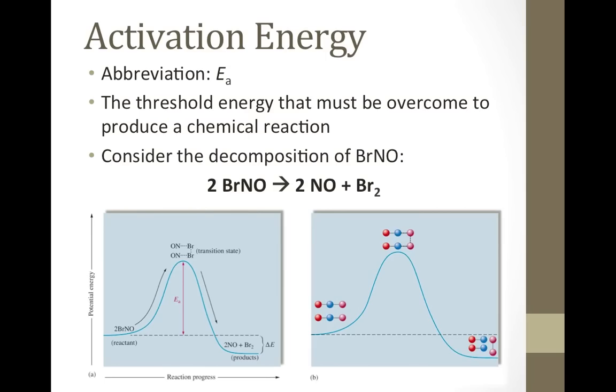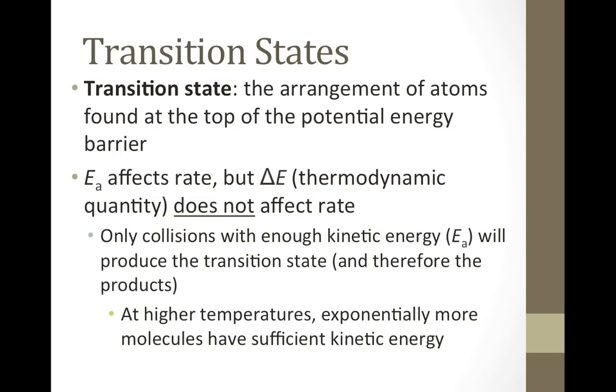before the products can be formed, the reactants have to form a high energy arrangement. The activation energy provides the energy needed to produce that high energy arrangement, called a transition state. A transition state is the arrangement of atoms found at the top of that potential energy barrier.